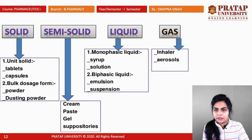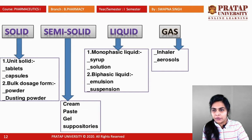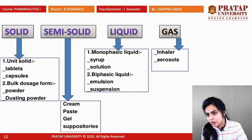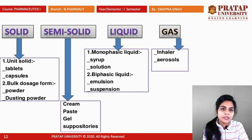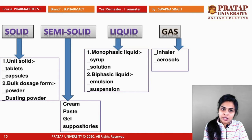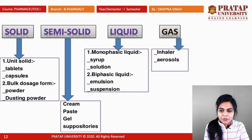To summarize the classification: solid dosage forms include unit solids like tablets and capsules, and bulk dosage forms like powders and dusting powders. Semi-solid dosage forms include creams, pastes, gels, and suppositories. Liquid dosage forms include monophasic forms like syrups and solutions, and biphasic forms like emulsions and suspensions. Gaseous dosage forms include inhalers and aerosols.